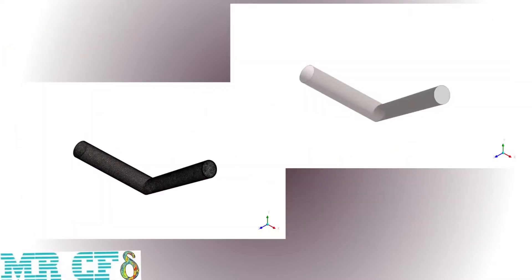The 3D geometry was generated in Design Modeler software. A bent pipe with a 3 cm diameter was sketched. In addition, an unstructured mesh grid was carried out using ANSYS Meshing software, and overall about 200,000 elements were generated.